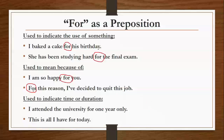Used to indicate time or duration. यहाँ पर हम कोई time या duration दिखाने के लिए 'for' का use करते हैं। Example: 'I attended the university for one year only' — मतलब एक साल के लिए मैंने ये university attend की है। जब भी हम Hindi में किसी statement में 'के लिए' use कर सकते हैं, तो वहाँ पर हम English में 'for' का use करते हैं।